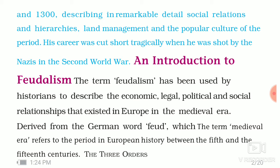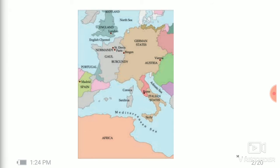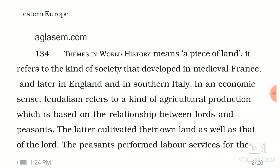The term feudalism has been used in the context of France, Belgium, and southern Italy. You can see this on the map in your book — this was Western Europe, where Germany, Italy, France, England, London, and Portugal were all located. Feudalism refers to a piece of land, and it refers to the kind of society that developed in medieval France and later in England and southern Italy. In an economic sense, feudalism refers to the kind of agricultural production based on the relationship between lords and peasants.